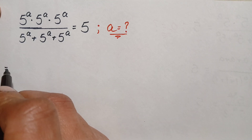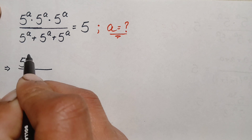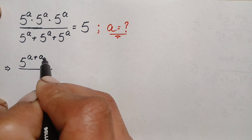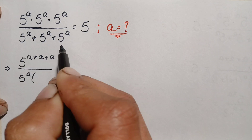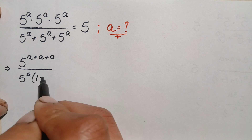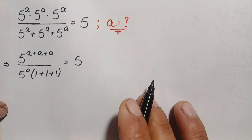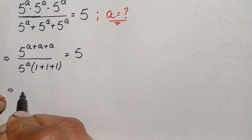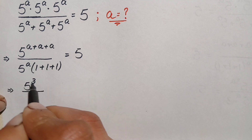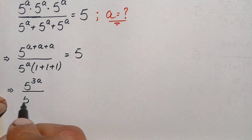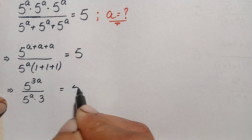So this equation becomes: in the numerator we write the base one time and add the powers, giving 5 raised to power a plus a plus a. In the denominator we take 5 raised to power a as common, leaving 1 plus 1 plus 1, which is 3. So this becomes 5 raised to power 3a, divided by 5 raised to power a times 3, is equal to 5.